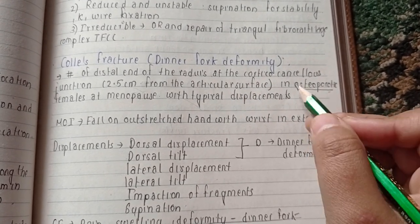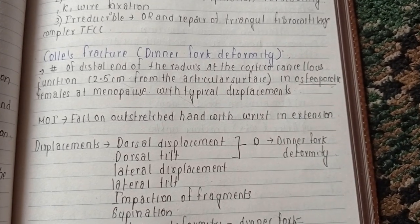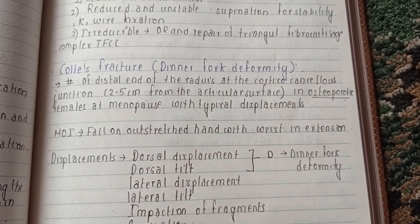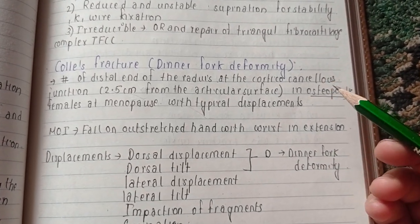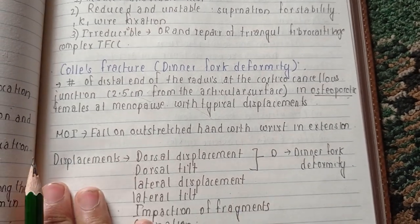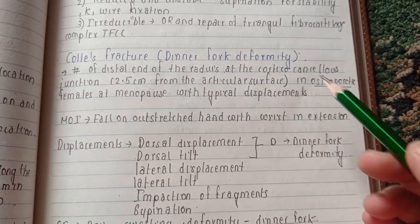In osteoporotic females at menopause, due to hormones, the bones are prone to fracture because they are osteoporotic. There are some typical displacements in this type of fracture.